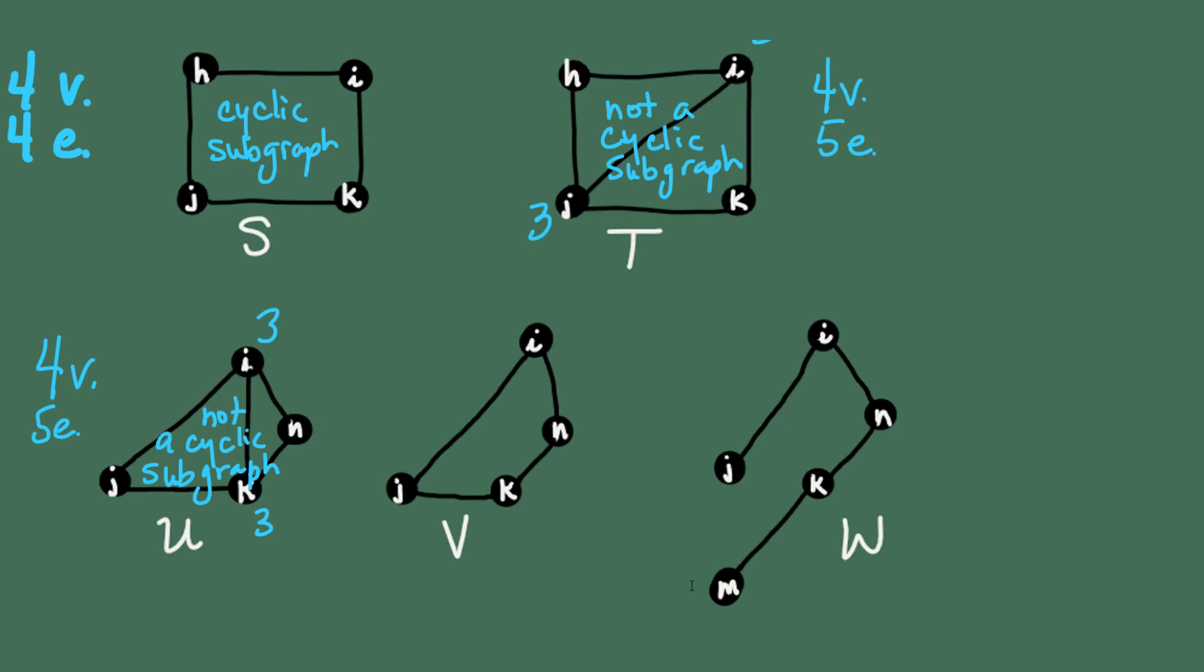How about subgraph V? One, two, three, four vertices, one, two, three, four edges. All of the vertices have degree two, and you can tell looking at it that it kind of travels in a little loop. So subgraph V is a cyclic subgraph.